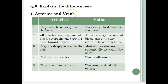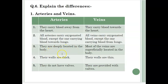Explain the differences between arteries and veins. Arteries carry blood away from the heart; veins carry blood towards the heart. All arteries carry oxygenated blood except the one carrying blood towards the lungs. All veins carry deoxygenated blood except the one carrying blood from the lungs. Arteries are deeply located in the body; most veins are superficially located. Artery walls are thick; vein walls are thin. Arteries do not have valves; veins are provided with valves.